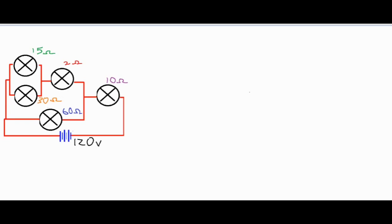First, we're going to collapse some of the parallel chunks to find the equivalent resistance and then find a current to work with — working backwards to find voltage drops. Our final goal is to figure out the brightness, and we're going to use the formula P = IV. If we know the current and the voltage drop for each lamp, it will be easy to compare them once we have numerical values.